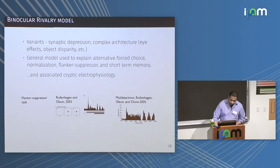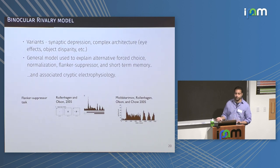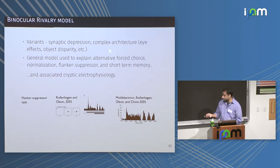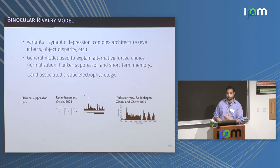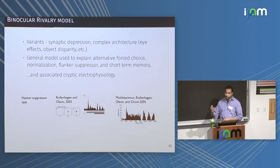This is a general model, and what I described is just one variant of how you can do this — there's actually a whole class of models. Other forms have things like synaptic depression: rather than local fatigue within the pool, you can have fatigue on the coupling between populations, which gives similar dynamics. There are also more complex versions — models accounting for eye effects, object disparity effects, traveling wave variants — but at the heart of all of them is this very simple network.